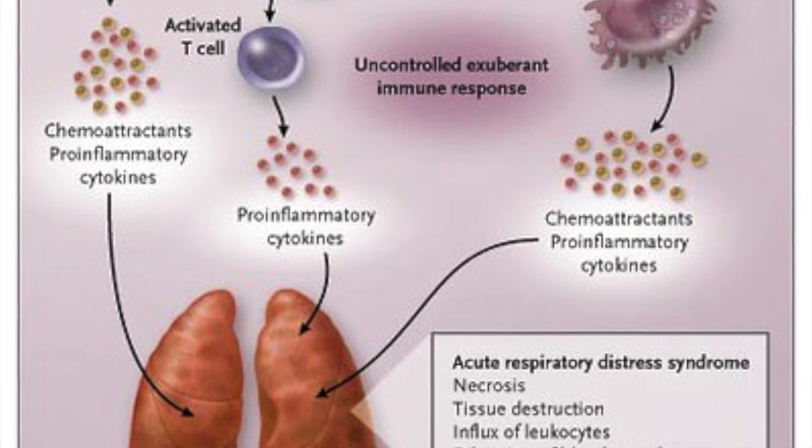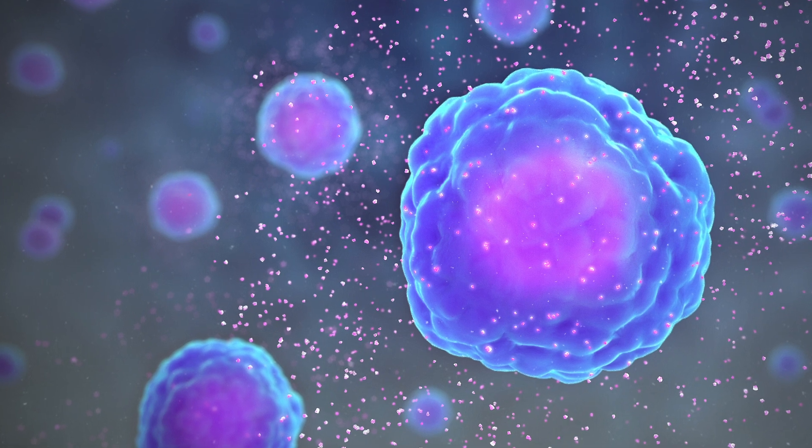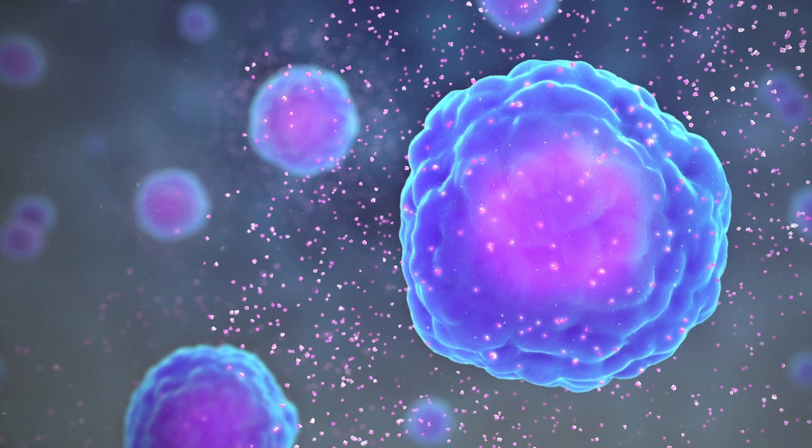When massive amounts of cytokines are produced, this is called a cytokine storm, which becomes overwhelming for the body. This leads to blood pressure dropping, and involvement of multiple organs — the brain, heart, lungs, kidneys, and blood vessels — resulting in overwhelming organ dysfunction and organ failure.